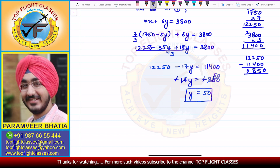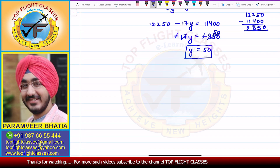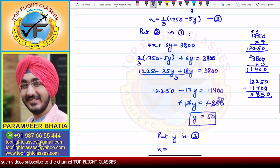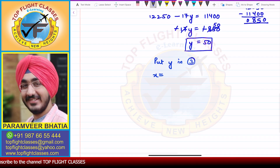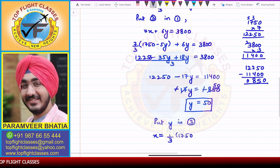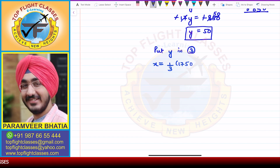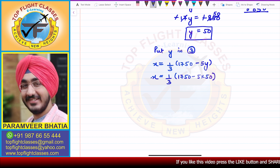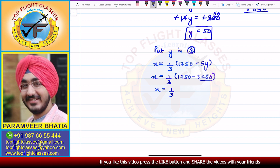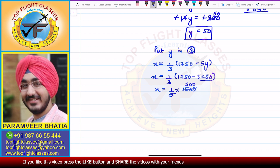So y is equal to 50. Now I put this value back into equation number 3: x = (1/3)(1750 − 5y) = (1/3)(1750 − 5×50) = (1/3)(1750 − 250) = (1/3)(1500) = 500. So x comes out to be 500.